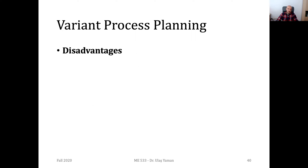Looking at the historical development: around 1975, a group technology-oriented system was invented. After that, the intelligence of systems began increasing. After the introduction of expert systems, there was another increase in intelligence — continuing until around 2010. Right now, people are working on generative approaches. Once finalized, systems will reach the same intelligence level as human experts. Currently we are probably around a moderate level — maybe 10 or 20 years from now we will have the same intelligence level as human machining experts.